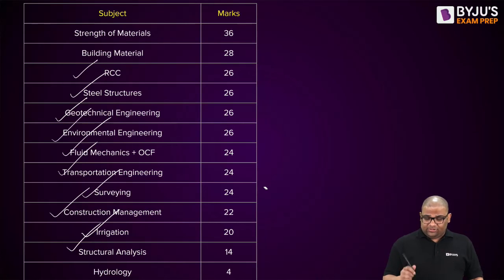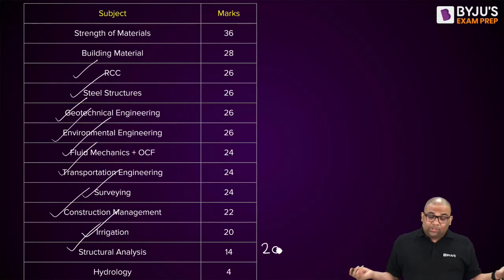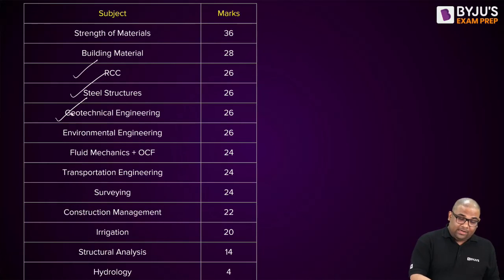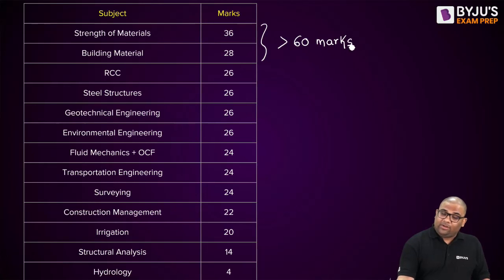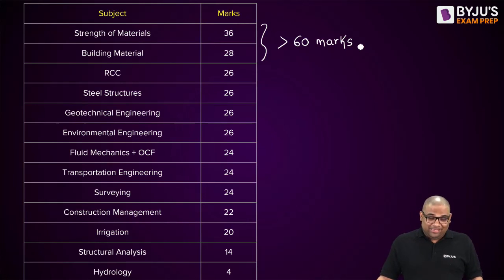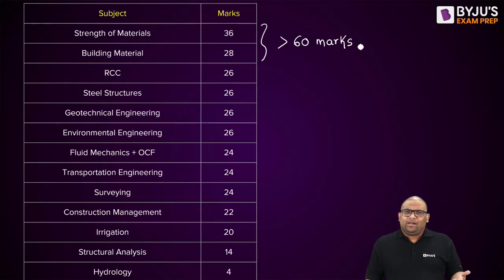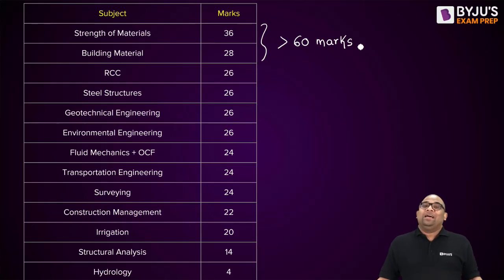Structural Analysis is having 14 marks on average, but in the next year they might ask 20 marks — so there is no guarantee. Building Material and Strength of Material together account for more than 60 marks, which is very important. If students ask where to start their preparation for ESC prelims, the answer is: you have to prepare everything, but you can start with Strength of Materials and Building Material and then go to other subjects. Hope this video helped you. We will be coming up with more videos. Thank you very much, see you in another video.